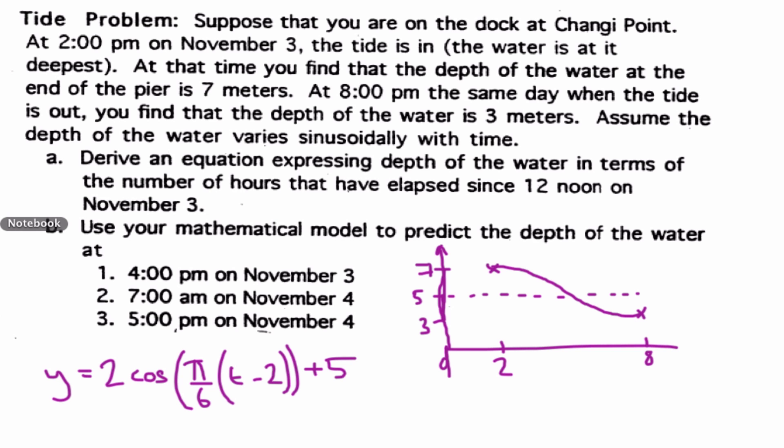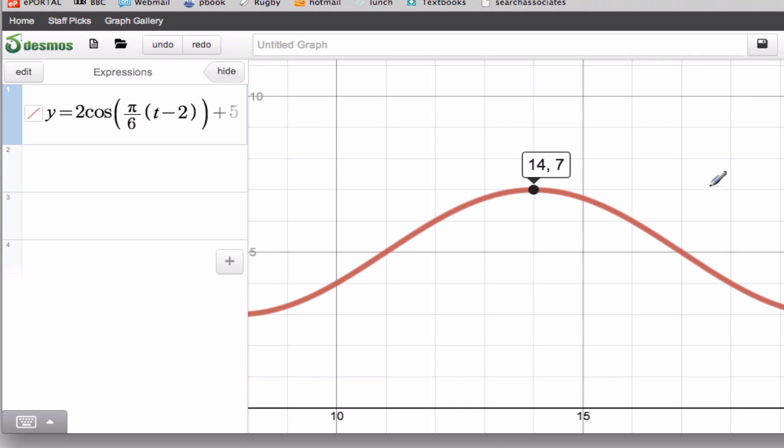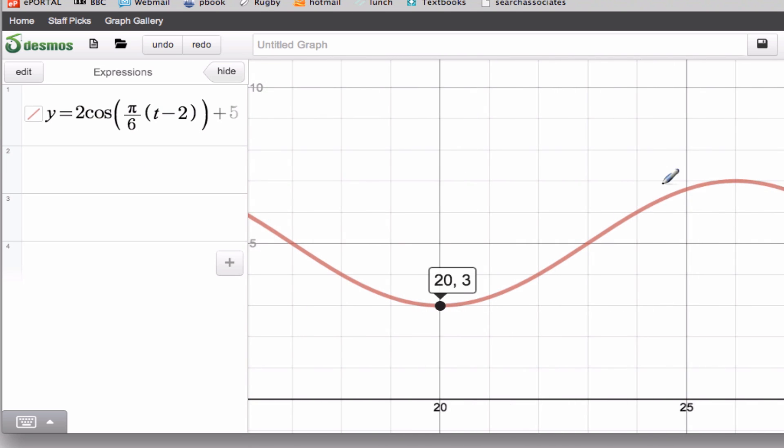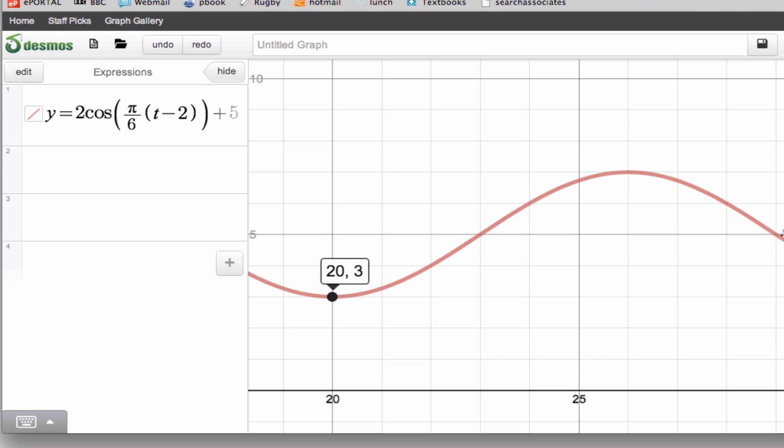And then carrying on. 5 p.m. the following day. So that's gonna be 12, 24, plus another 5. So 29 we're gonna need to go along to. Let's get that on here. So right away along to here. 29. We're gonna be at 5 meters. Bang in the middle of our period.